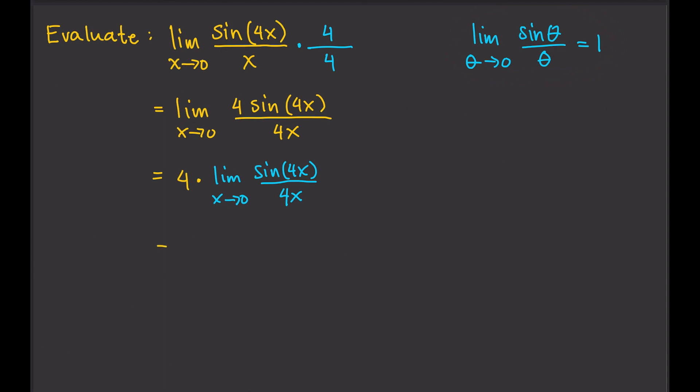So, therefore, that's equal to 4 times the limit, which is equal to 1. And finally, that gives us 4. So the limit of sine 4x over x as x approaches 0 is equal to 4.